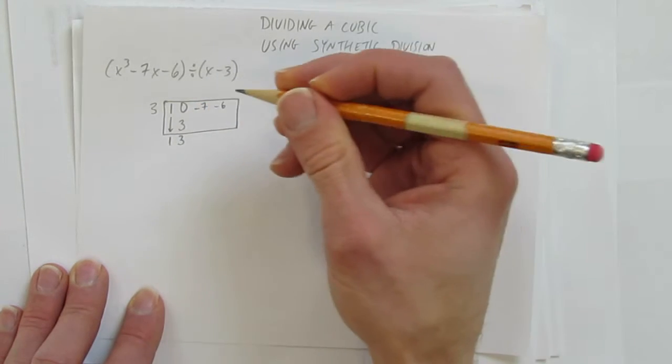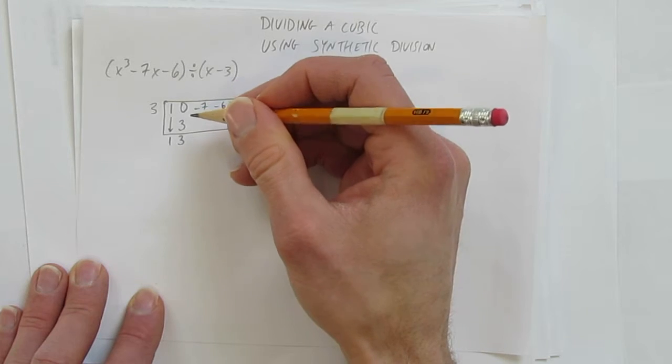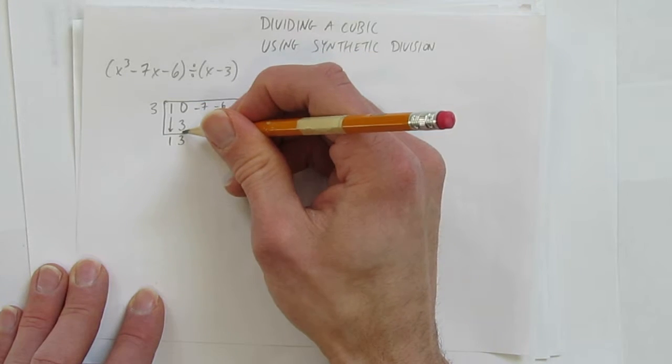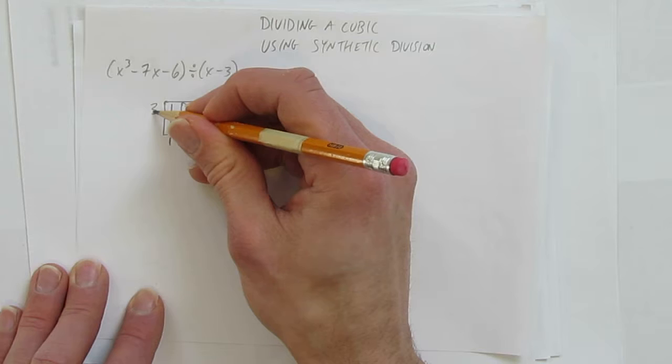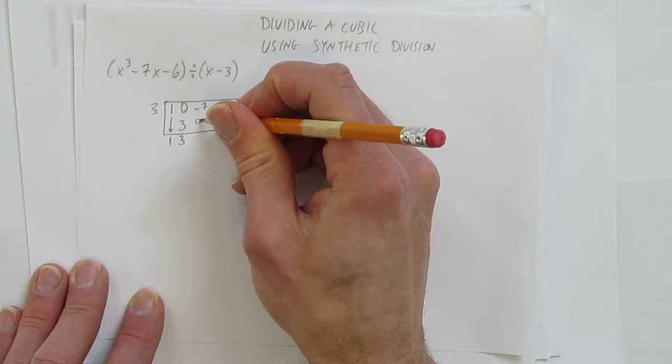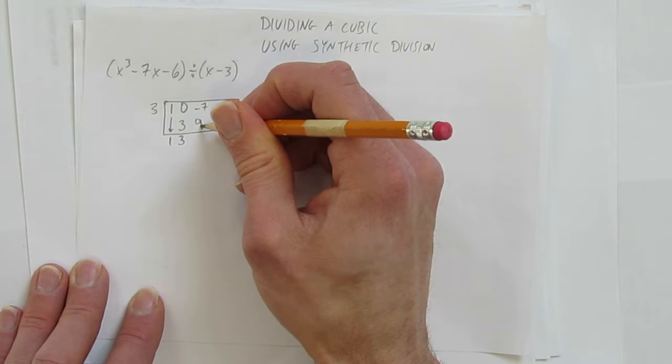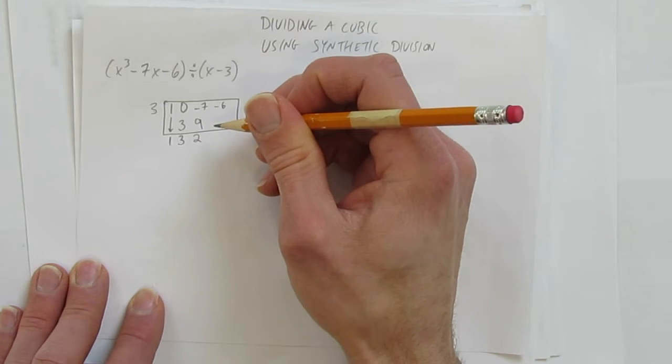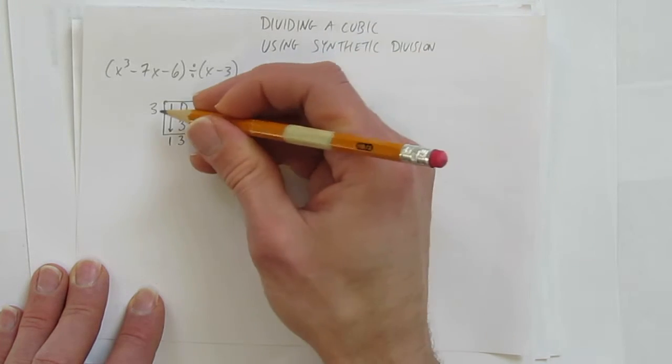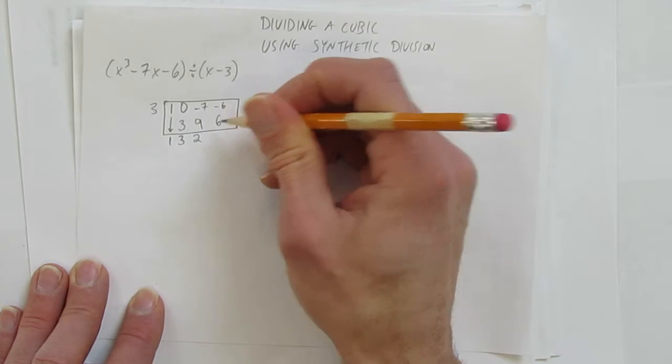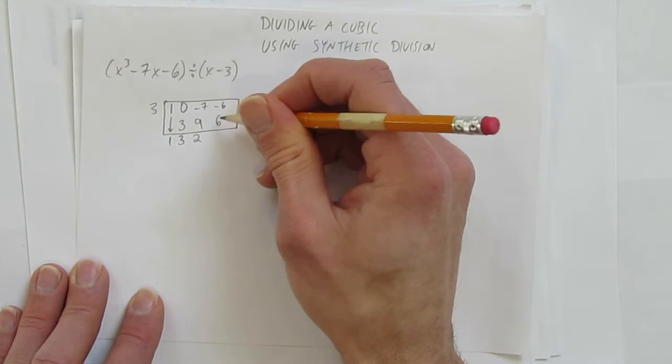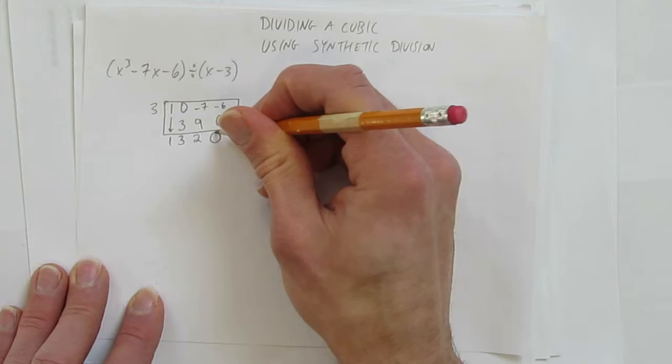Synthetic division is going to repeat those steps over and over, the multiply and the add. Here it is again. Watch. 3 times 3 is 9. Put that here. Now add. Negative 7 plus 9 is 2. Now multiply. 3 times 2 is 6. Now add. Negative 6 plus 6 is 0. And we're done.